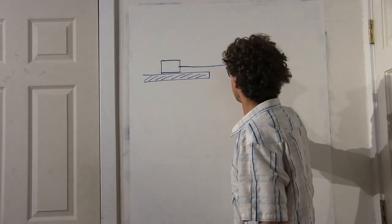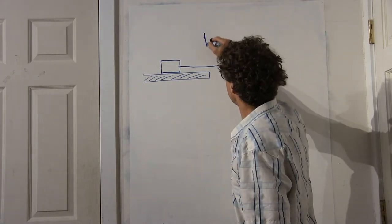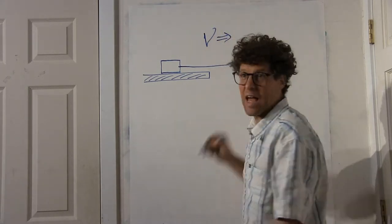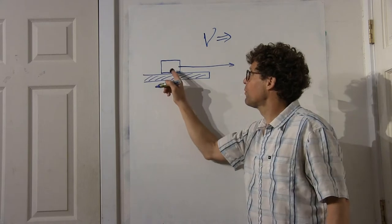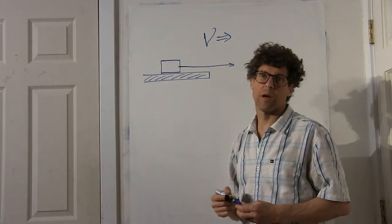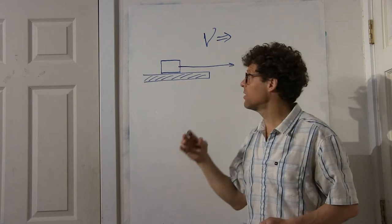If you pull it in this direction, this is the direction of velocity, the frictional force on the block will be in the opposite direction. So it resists the relative velocity.